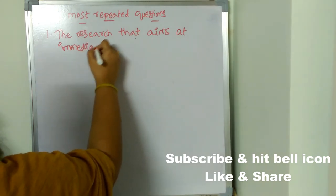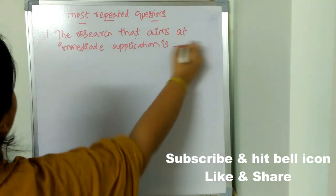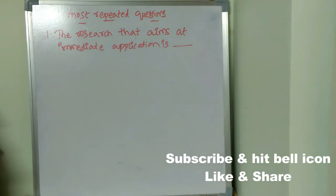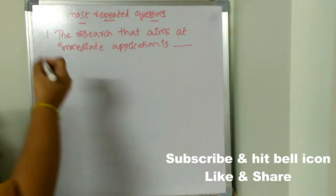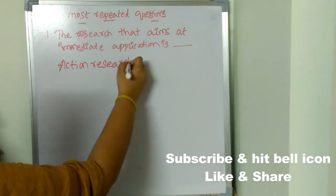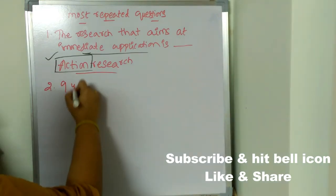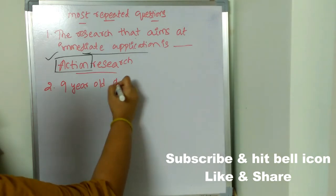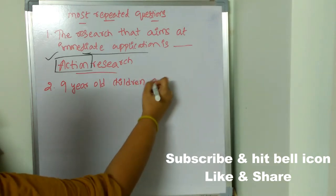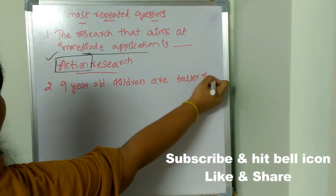The research that aims at immediate application is dash. Okay, the research that aims at immediate application is dash. Answer is action research, because action research aims immediate application. Whatever it does, it has immediate application. Okay, nine year old children are taller than five year old children.